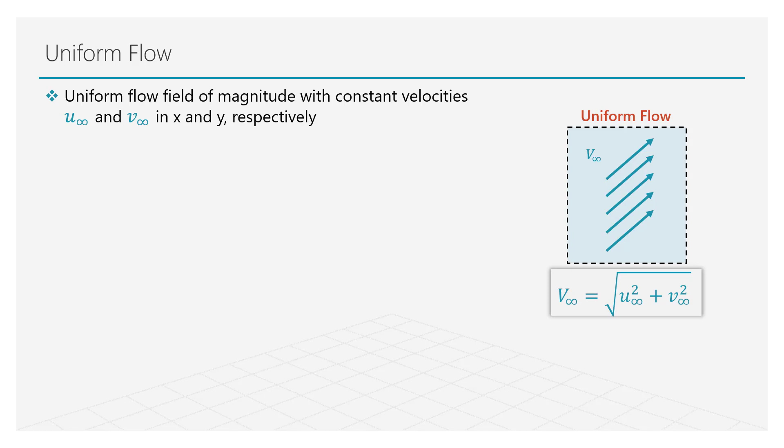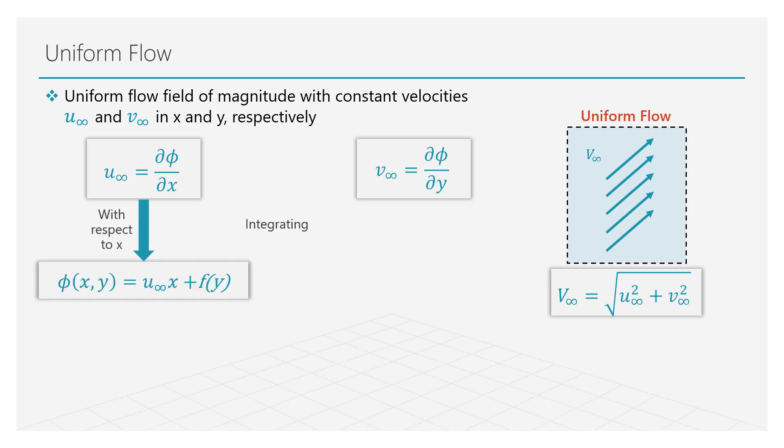From the definition of the velocity potential, we know that the gradient of the velocity potential is the velocity of the fluid. Integrating these two equations with respect to the x and y directions respectively, we get two governing equations for the same variable, i.e. the velocity potential.